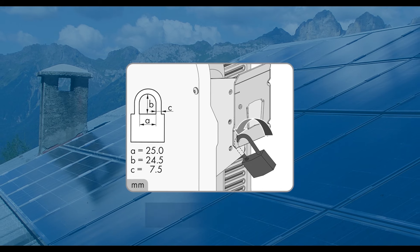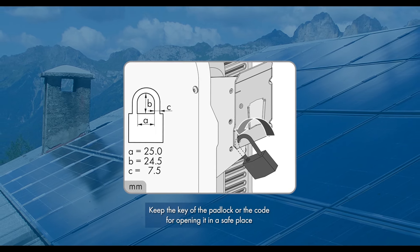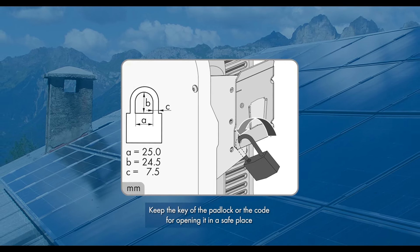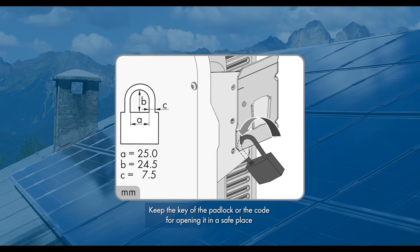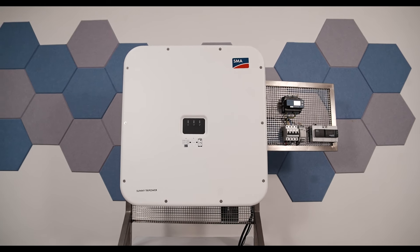To secure the inverter against theft, guide the padlock shackle through the metal tab of the wall mounting bracket and through the mounting tab of the inverter before closing it. This completes mounting.